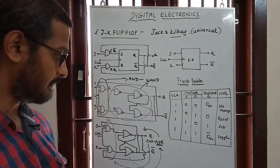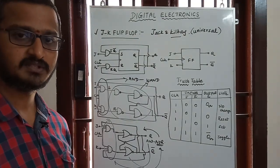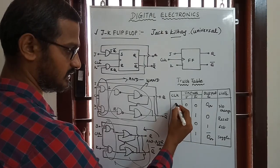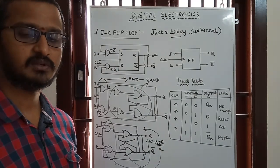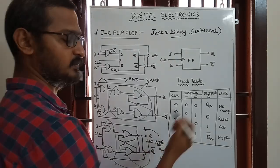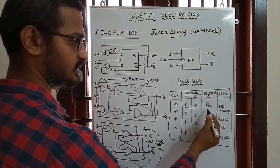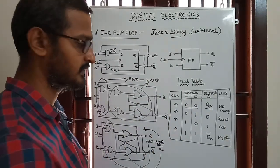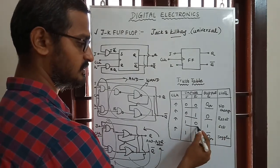Now let's look at the truth table. There are clock signals — when the clock is low (zero), the flip-flop does not change. When the clock is high, the flip-flop responds. In the truth table, when J and K are both 0, the output Q shows no change — it remains the same.